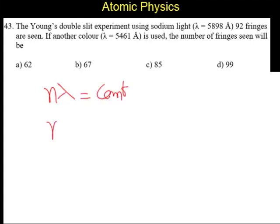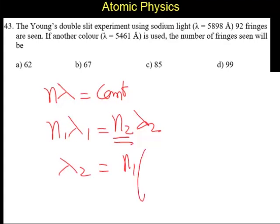In our case, we can say n1 into lambda 1 equal to n2 into lambda 2. Here n is the number of fringes. n1 into lambda 1 equals n2 lambda 2. Now, we have to calculate the n2 in the second case. n2 equal to n1 into lambda 1 by lambda 2.